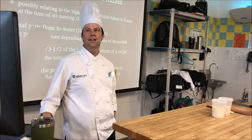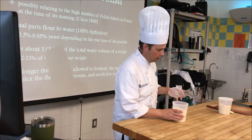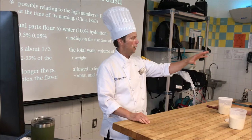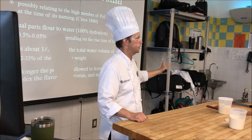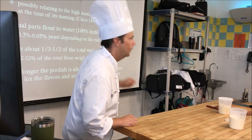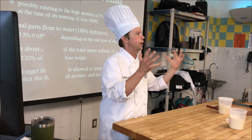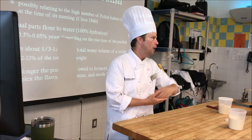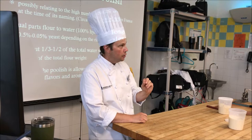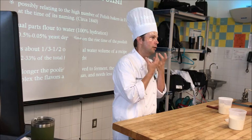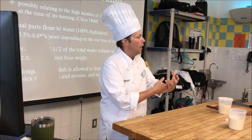Poolish is a pre-ferment at about a one-to-one ratio — 100% hydration, meaning equal parts flour and water. The amount of yeast you add depends on how long you want it to ferment. The smaller the amount of yeast and the longer the time, the more complex the flavor and texture of the resulting bread.